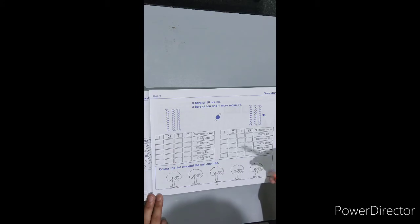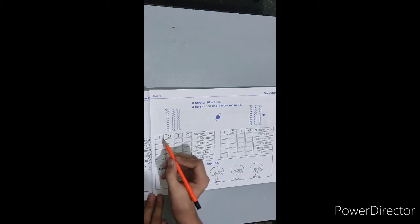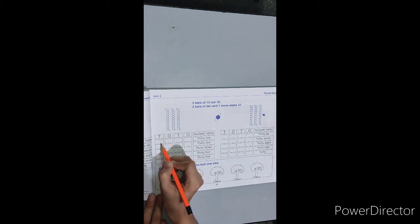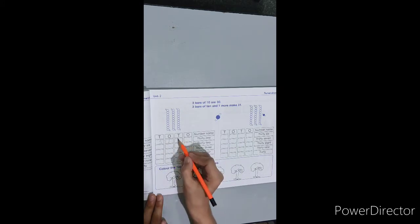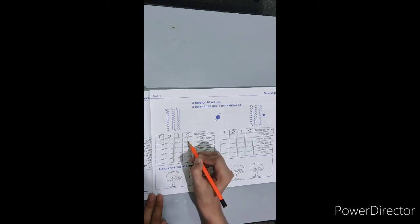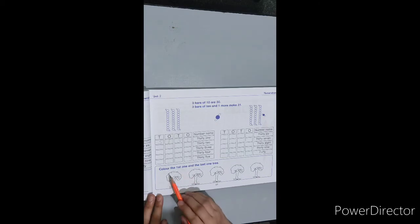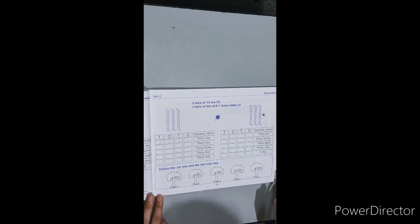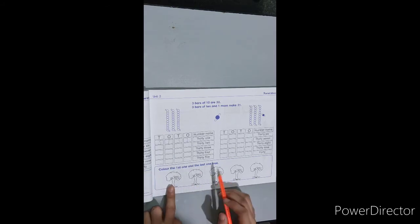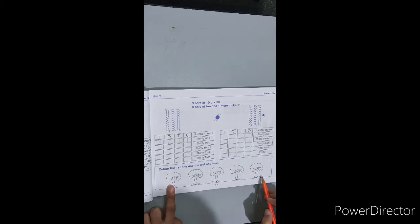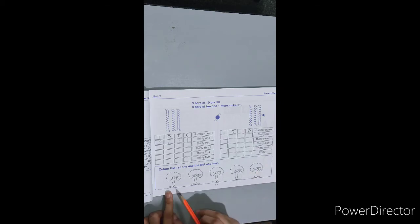And the last one — we have five trees. We have to color the first one and the last one tree. Dear children, 'first one' means the one that comes first — this is our first tree. 'Last one' means the one at the very end — this is our last tree. So you have to color the first one and the last one. Make an outline first, then do up-down coloring. This is the first one and this is the last one.